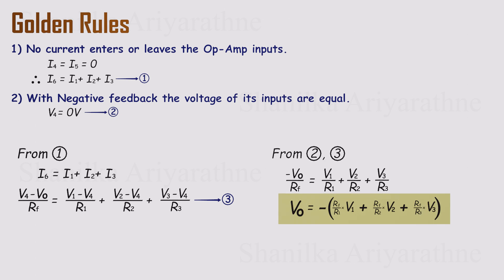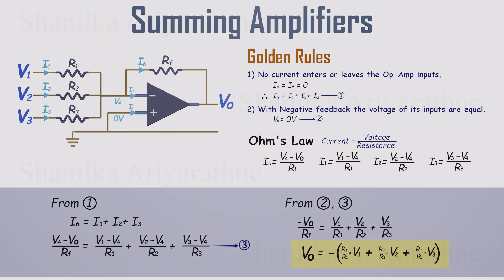What we're left with is an expression showing that the output voltage is a weighted sum of the inputs, with the weights set by the resistor ratios. That's the equation for the summing amplifier. And it works no matter how many inputs you add.